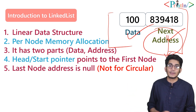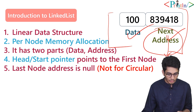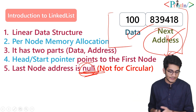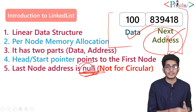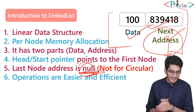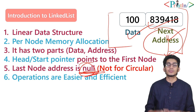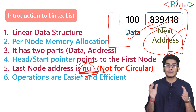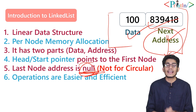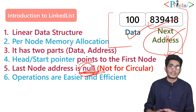Null termination is applicable for singly and doubly linked lists, but not for circular linked lists. The last node's address will be null — that is an important point to remember. Operations are also easier in linked list: in an array, when you insert anything you have to do a rightward shift, but in linked list that process is much easier.